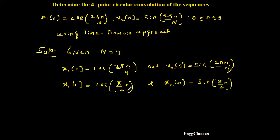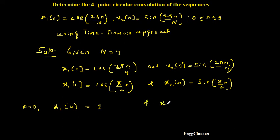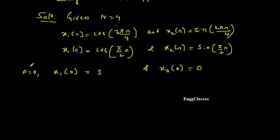Now I will vary n as 0, 1, 2, 3. For n = 0: x1(0) = cos(0) = 1, which is a standard result. And x2(0) = sin(0) = 0. So these results I know. Based on that I will write the answer. Then let me put n = 1.